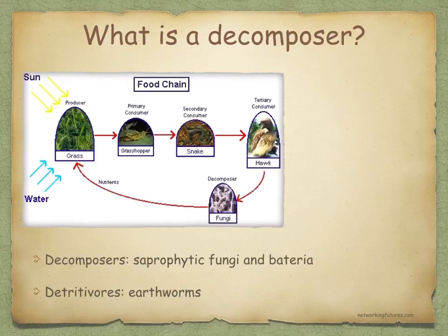Decomposers and detritivores feed on dead organisms. Earthworms feed on dead leaves, and decomposers feed on feces, urine, and dead leaves, as well as dead organisms.